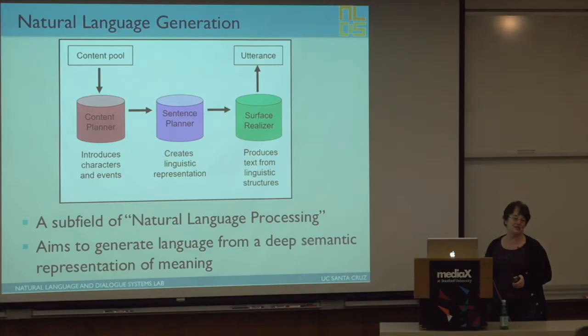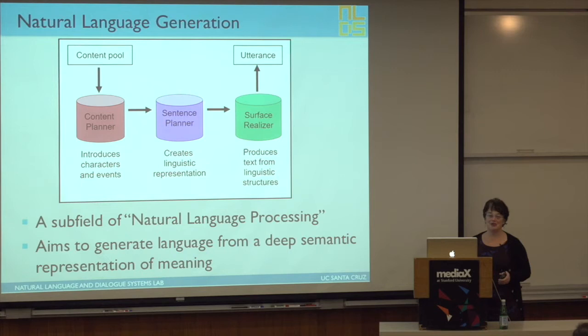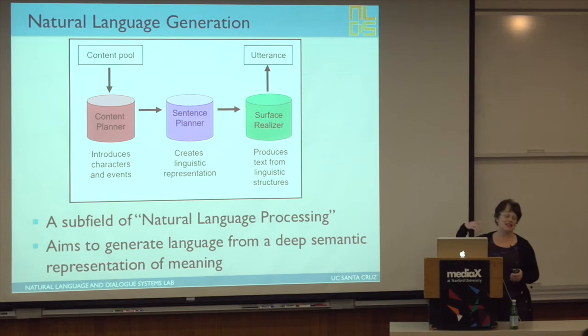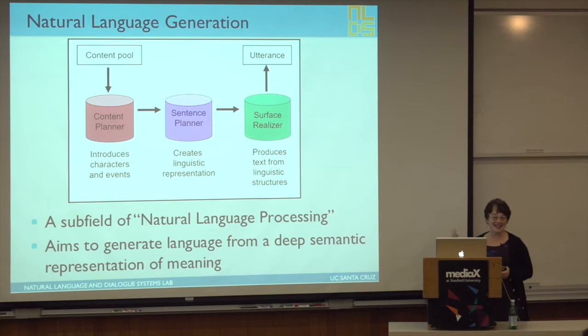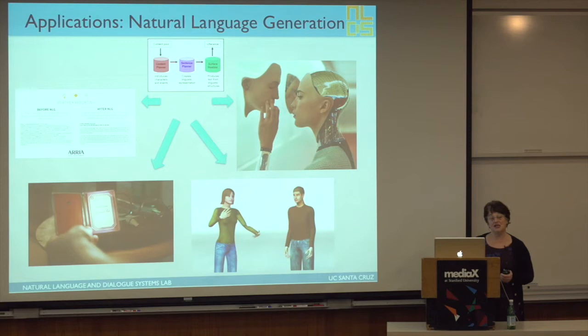The idea is that it aims to generate language from a deep semantic representation of meaning. What they say about the difference is that natural language processing is trying to count from one to infinity, but natural language generation is trying to count from infinity back to one. So there's a lot of things about it that actually make it more challenging in many different ways than just processing text, and there are lots of different applications.